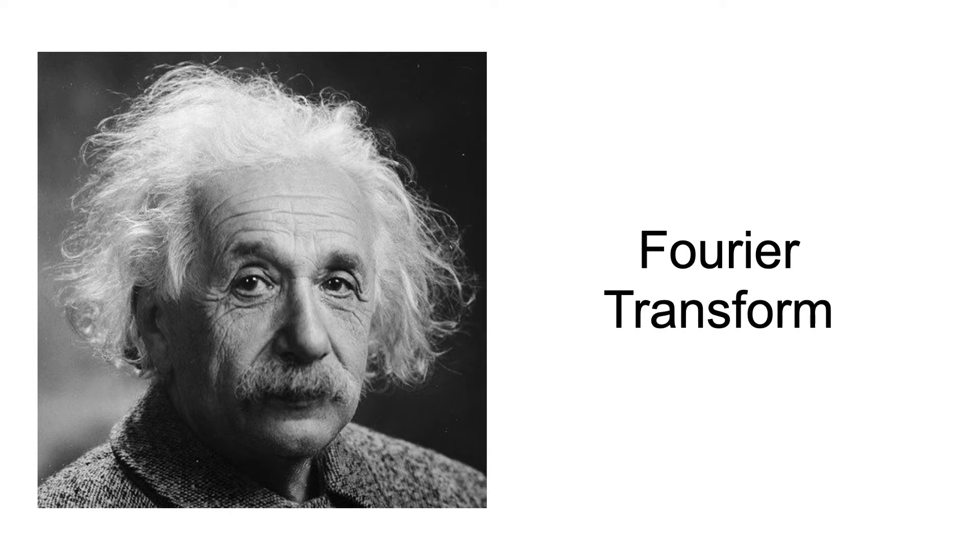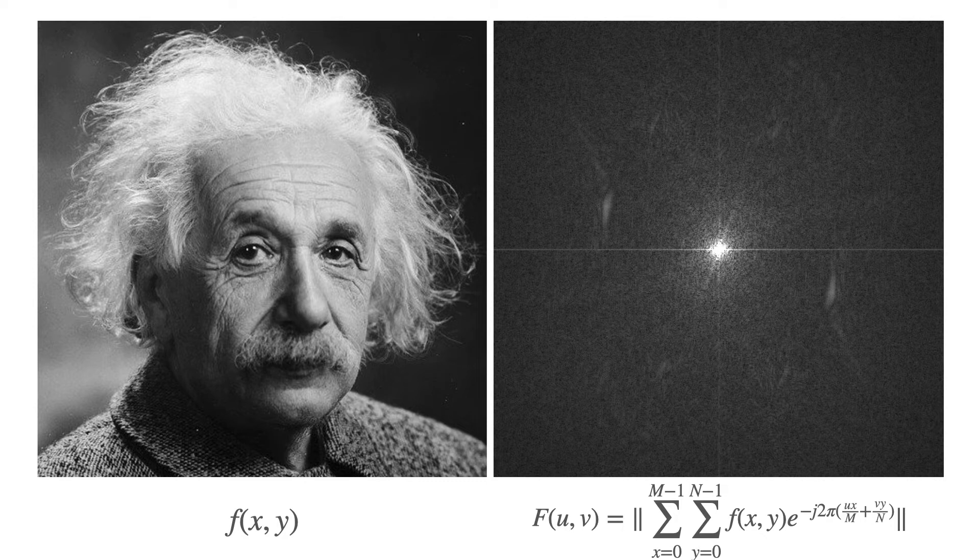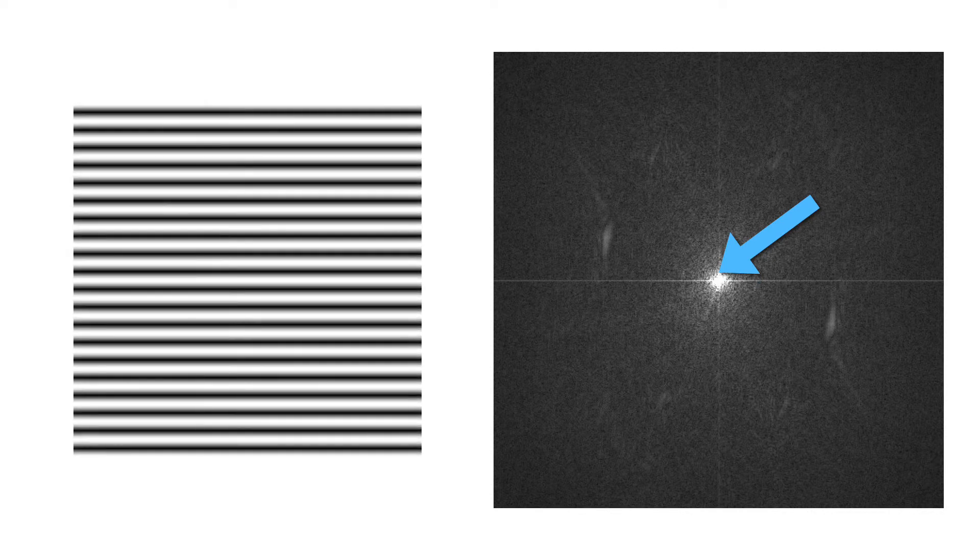How does this work? On the right is a Fourier transform of the Einstein image. Every dot corresponds to a frequency, and the dot's brightness is the magnitude or strength of that frequency in the image. For example, this bright dot near the center corresponds to this low frequency on the left. And as you move away from the center, you get higher frequencies. But how do these combine to give you the Einstein image?